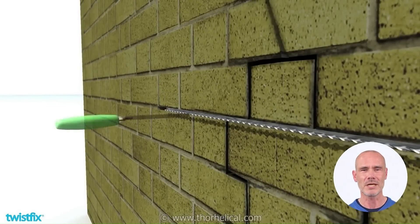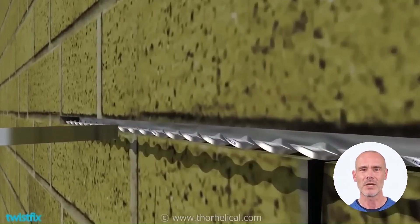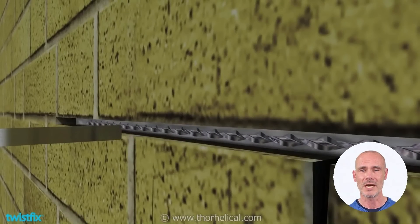Next, push in a length of Twistfix helical crack stitching bar, and embed the rod at about one-half the depth of the grout.